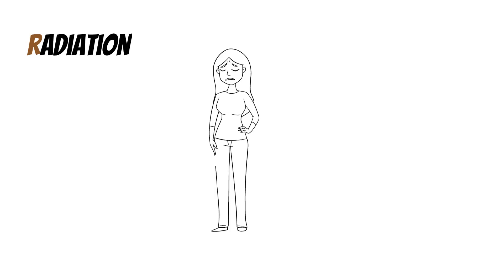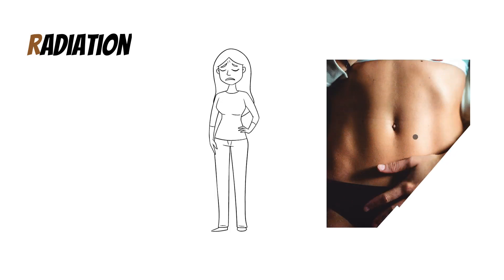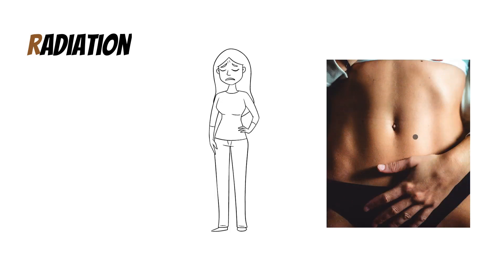The next component is radiation. The pain doesn't have to be just localized to the abdomen — sometimes it radiates down the leg or up to the shoulder. These things give us clues as to what is going on within the actual abdomen. Radiation is a key component when asking about the history and assessing for abdominal pain.